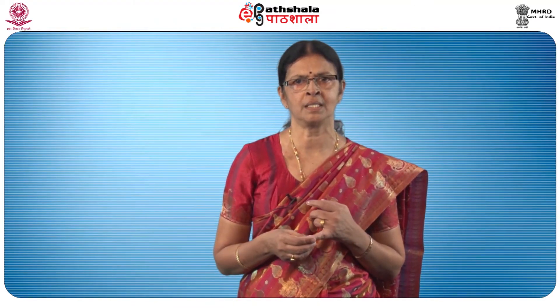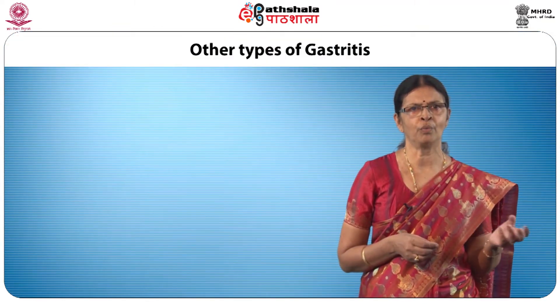Chronic gastritis is often directly attributed to dietary indiscretion or indirectly to toxic substances. Nevertheless, it may also occur in the absence of any known cause. Besides the primary and secondary chronic gastritis, there are other types of gastritis.